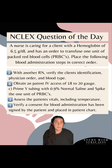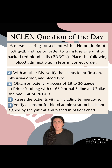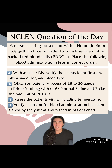Step 4 is going to be option B. You're going to obtain a patent IV access of 18 to 20 gauge. You might have a patient that already has that IV access — just make sure that it's patent and make sure that it's bigger than a 20 gauge. 20 is the smallest that you can have for blood administration.